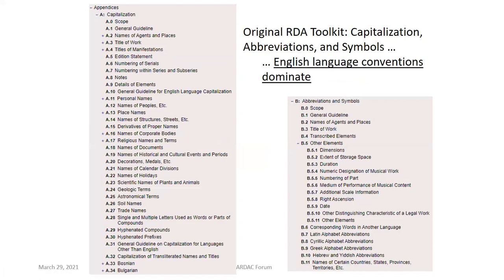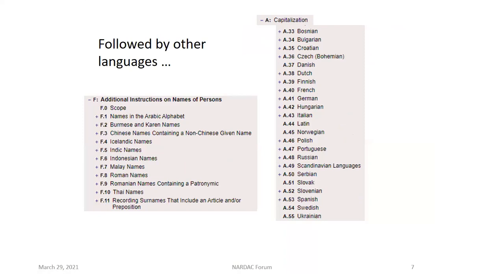When we look under the headings in the original Toolkit, a pattern emerges. Many subtopics appear, but it becomes clear that these are all under the English language. As we browse down these lists, we eventually encounter headings for other languages and scripts. Here's the expansion of those other languages displayed in full, seen under the topics of capitalization and names of persons. Even under names of persons with regards to surnames with articles and prepositions, it's broken down yet again under that heading into different language groups.